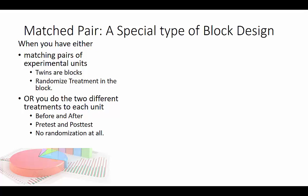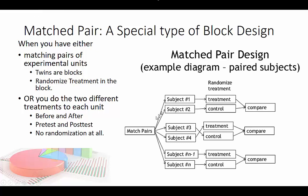Note that there's no randomization at all in this before-and-after design. Let's look at what the diagram would look like for the twins case. With twins, you want to make sure each twin is grouped together in a block, and here we randomize the treatment — so we don't always take the first twin as the one getting the treatment and the other as the control.